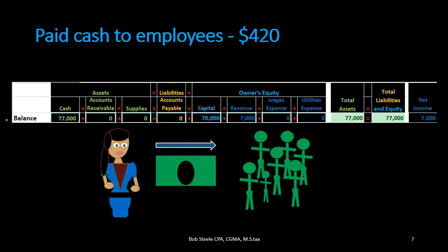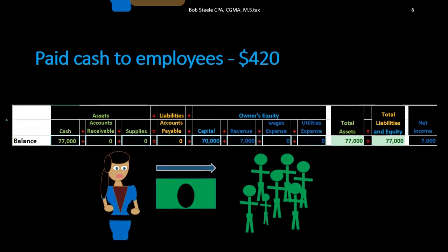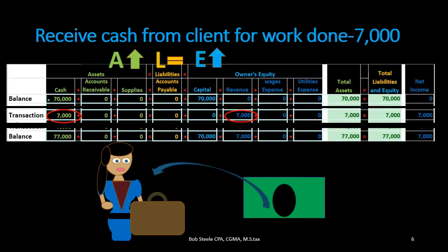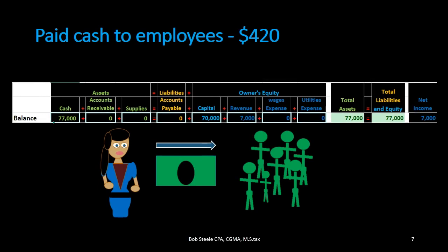Next transaction. We start with the prior ending balance as our new beginning balance — we're only concerned with that balance, the new activity, and then the new balance. Transaction: paid cash to employees. Is cash affected? Yes — keyword is 'paid,' therefore cash is going down. We're going to decrease cash, and then we need to know what other account is affected when we pay employees. Remember we are the owner, not the employee — we always record from the perspective of the business — so we would have wages expense.